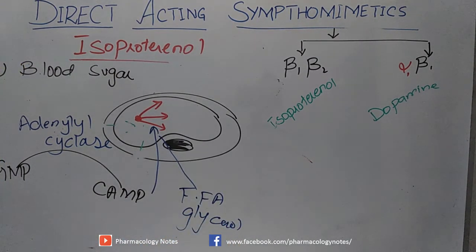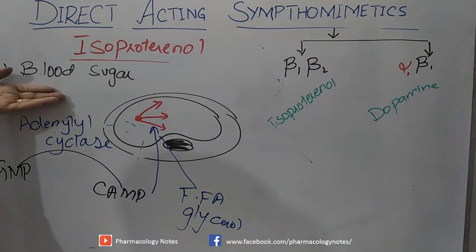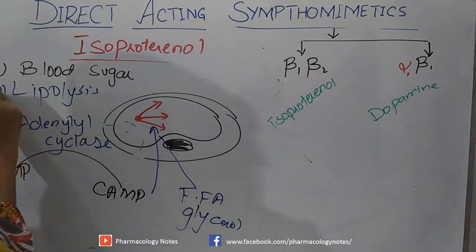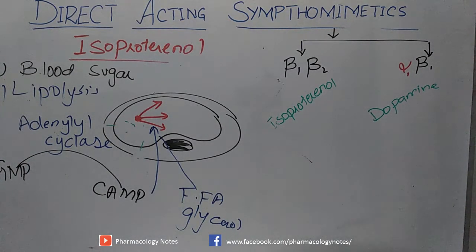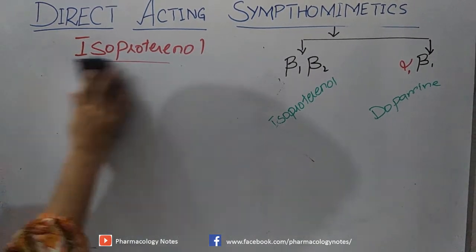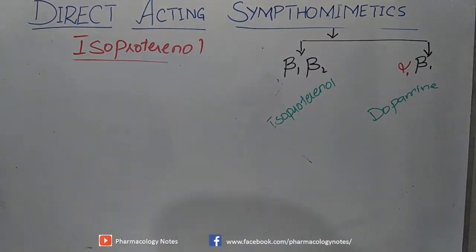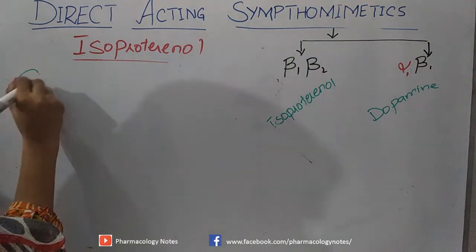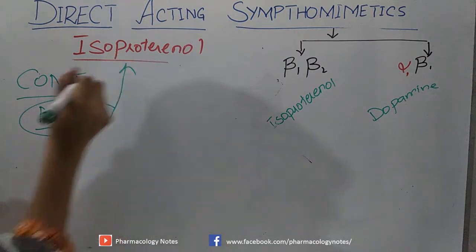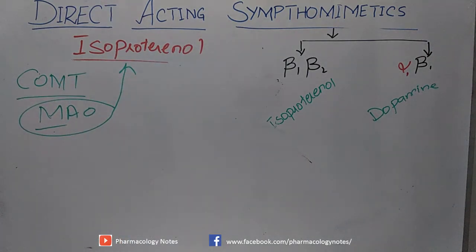However, isoproterenol is not used therapeutically for its effects on blood sugar or lipolysis. Isoproterenol is a marginal substrate for catechol-O-methyltransferase (COMT) and is not a prominent substrate for monoamine oxidase (MAO). Adverse effects are similar to epinephrine — headache, fear, and anxiety — but are slight since it is administered orally.